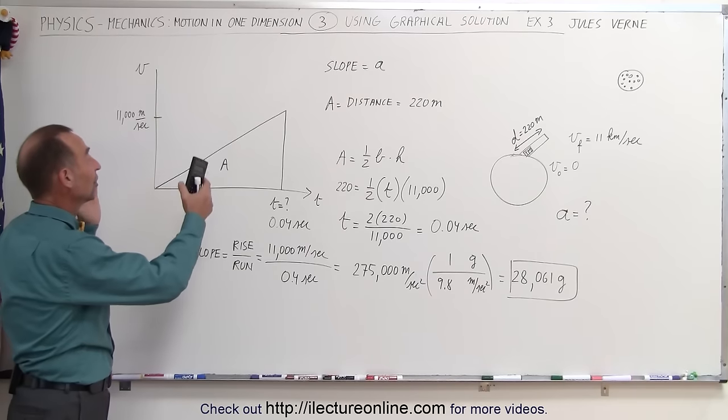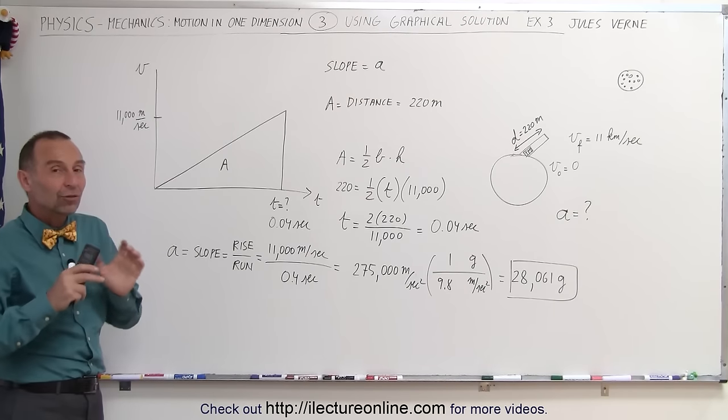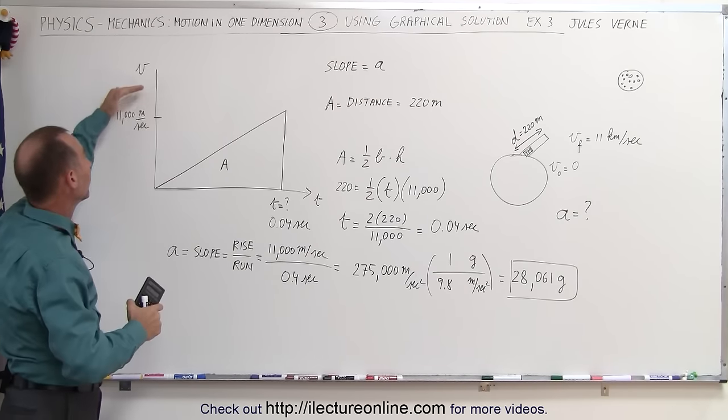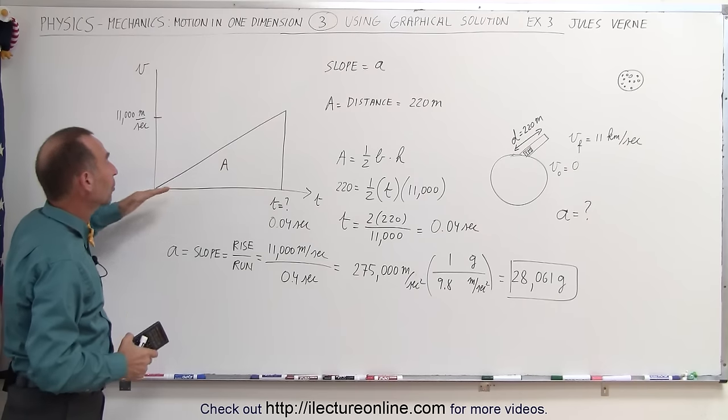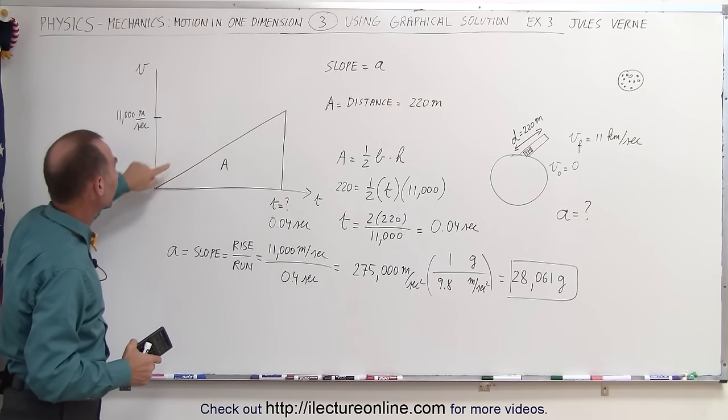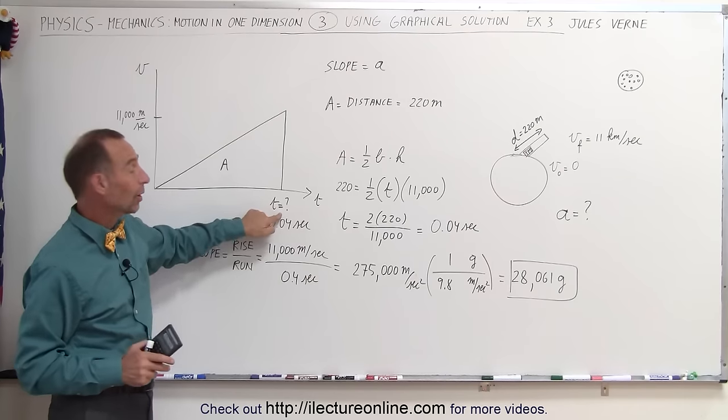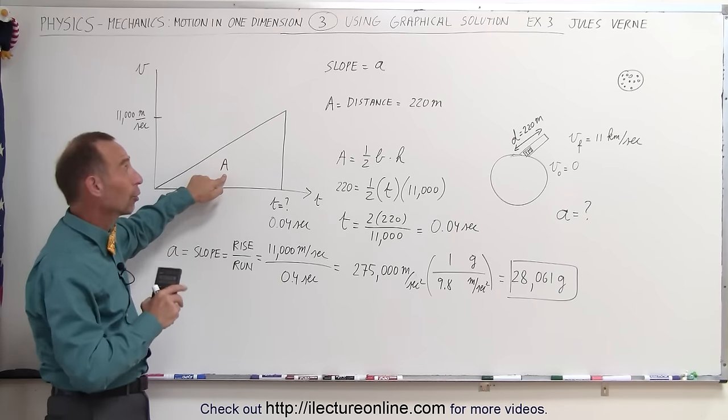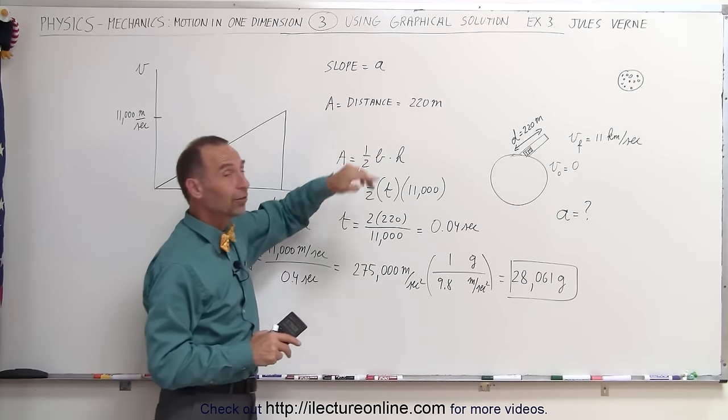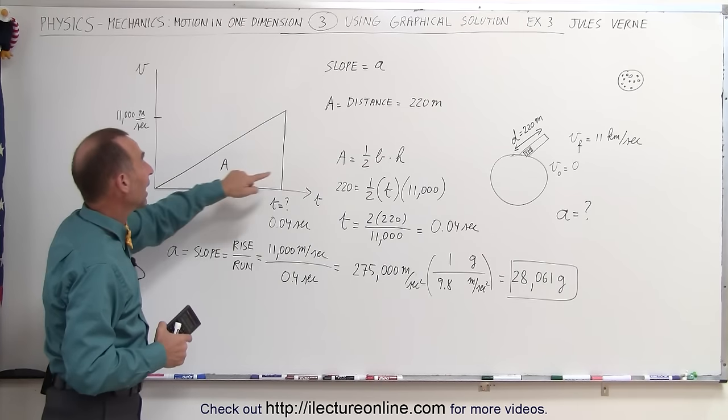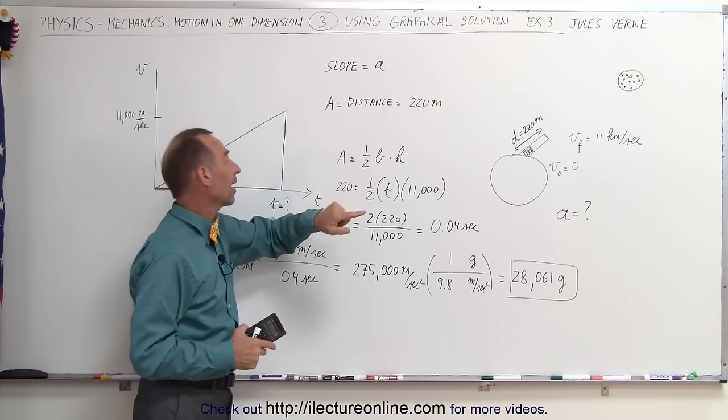Using graphical methods, it's very easy to graphically represent the motion in a V versus T graph. We go from 0 to 11,000 meters per second over a certain period. We realized the area under the curve equals the distance traveled. Then we said the area equals one-half the base times the height.